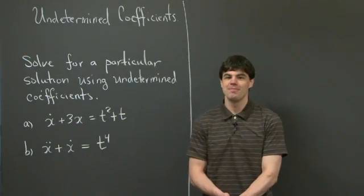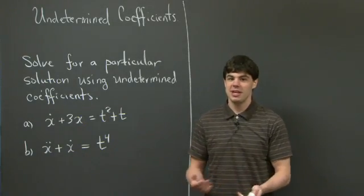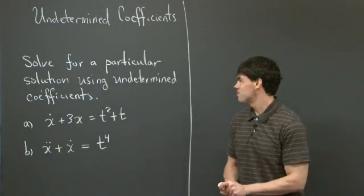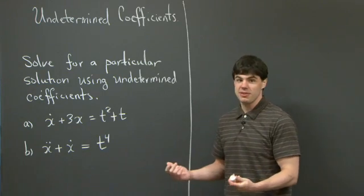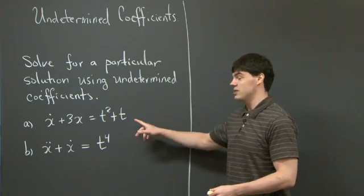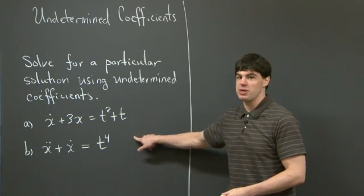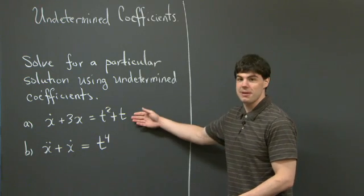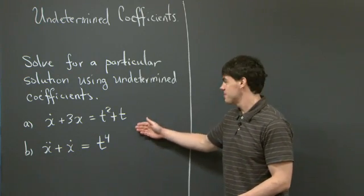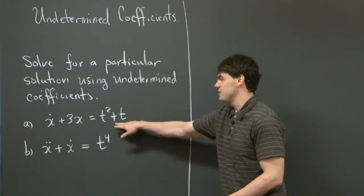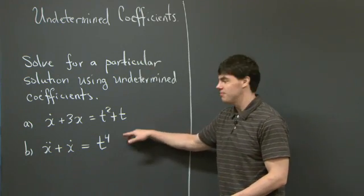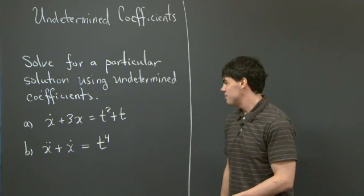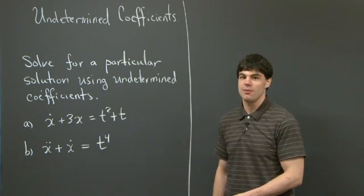Hi everyone, welcome back. So today I'd like to tackle a problem in undetermined coefficients. Specifically, find a particular solution to each of the following equations using undetermined coefficients. For part A, we have x-dot plus 3x equals t squared plus t. And for part B, we have x-dot-dot plus x-dot equals t to the 4.